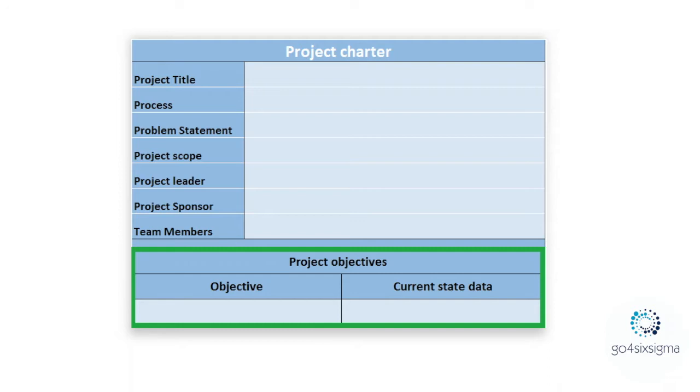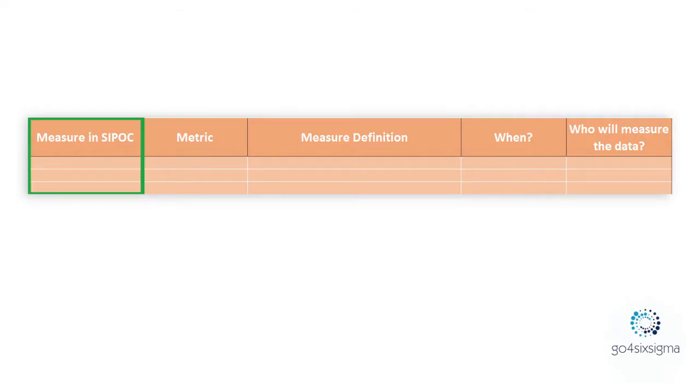Let's start with the first document: the data collection plan. Look at your project charter, specifically your objective section. Determine what current state data needs to be collected. In the first column, be very specific about whether your objective is related to the input, the process, or the output.